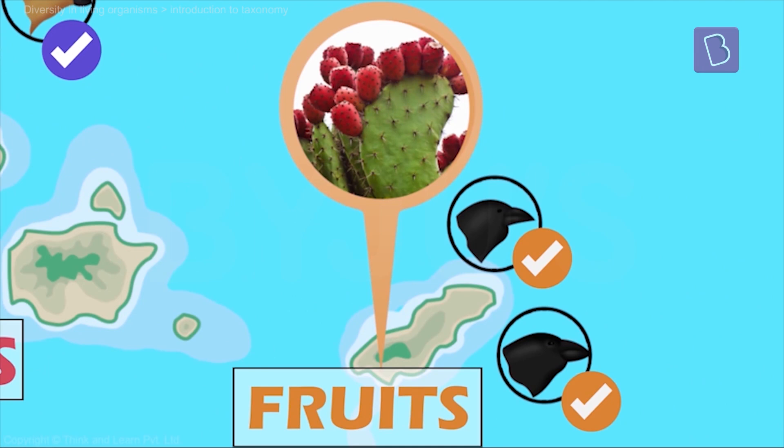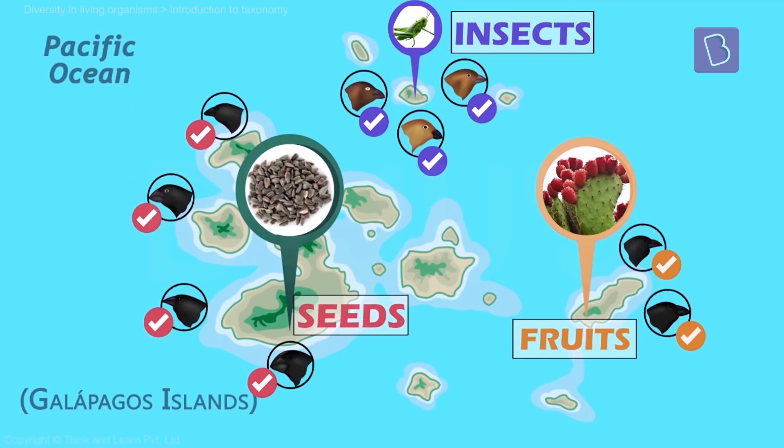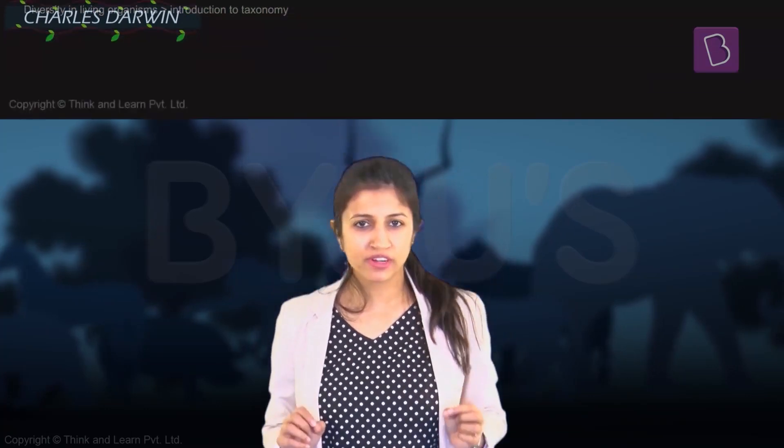This variation would show how the birds adapted themselves to superior variations based on the needs of the environment they were in. They increased their fitness, and this would form the crux of the theory of natural selection. So what The Origin of Species actually tells us is very important.